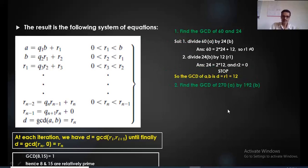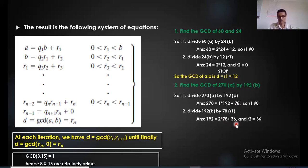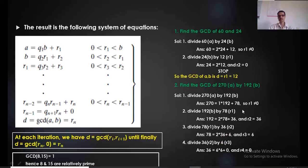Now a larger example: GCD(270, 192). Step 1: 270 = 1×192 + 78, R1 = 78 ≠ 0. Step 2: 192 = 2×78 + 36, R2 = 36 ≠ 0. Step 3: 78 = 2×36 + 6, R3 = 6 ≠ 0. Step 4: 36 = 6×6 + 0. Remainder is 0, so the previous remainder R3 = 6 is the GCD. Therefore, GCD(270, 192) = 6.